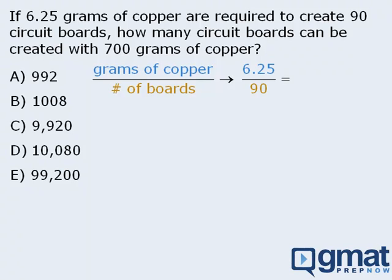This ratio will be equal to a second ratio, where we have 700 grams of copper, and we want to determine the number of circuit boards that can be created, which we'll represent with the letter B. Now at this point we need to solve our equation for B, and we need to do so in as little time as possible.